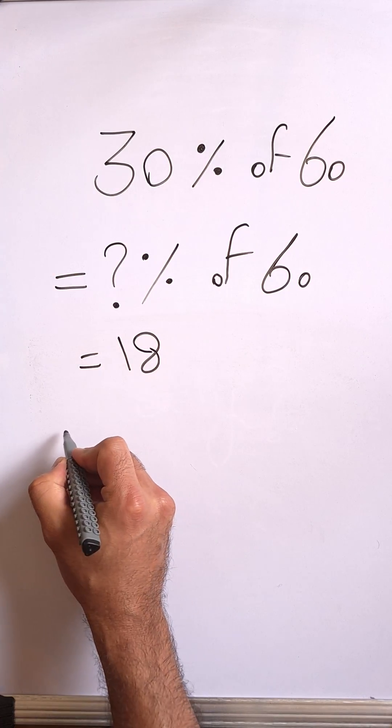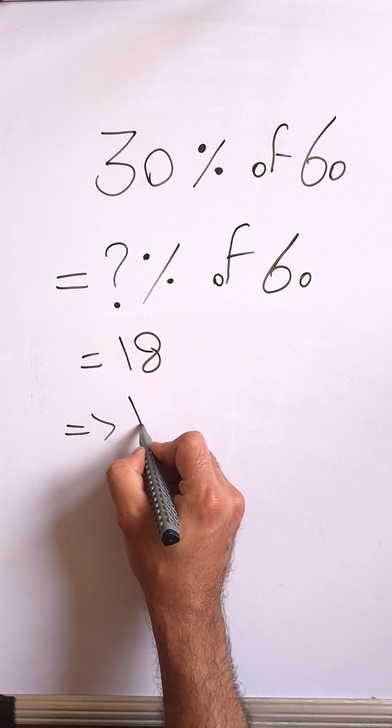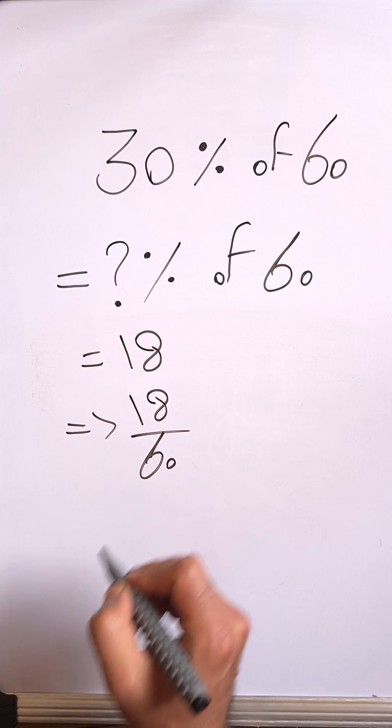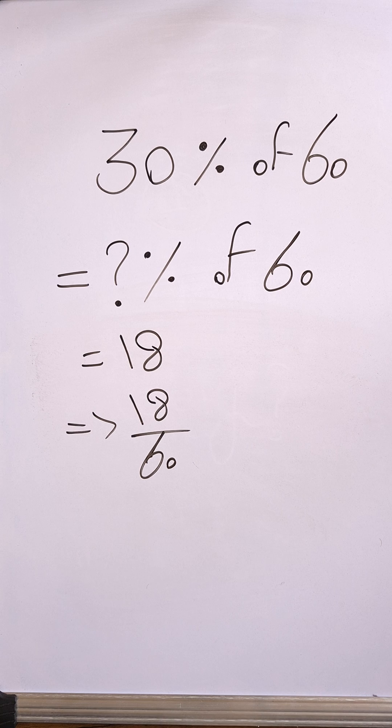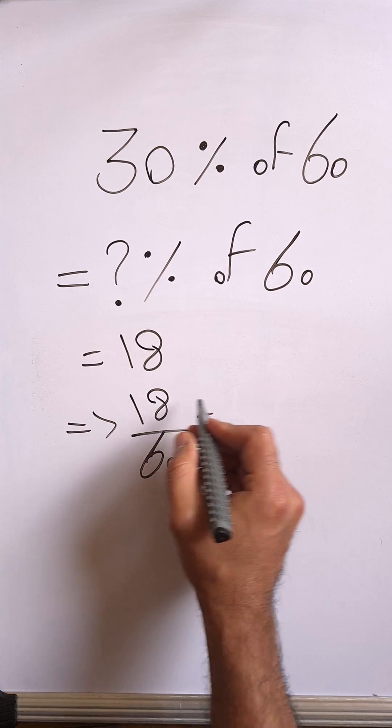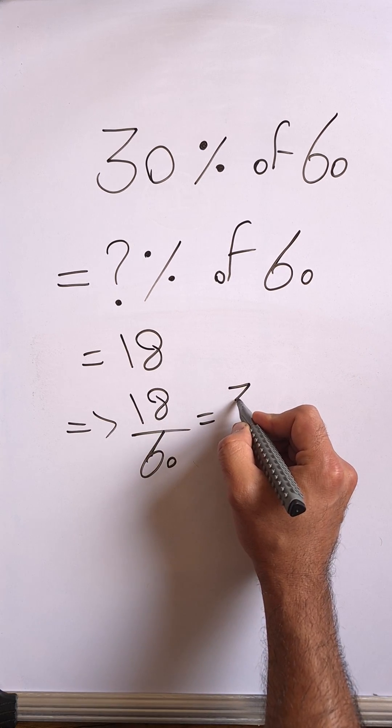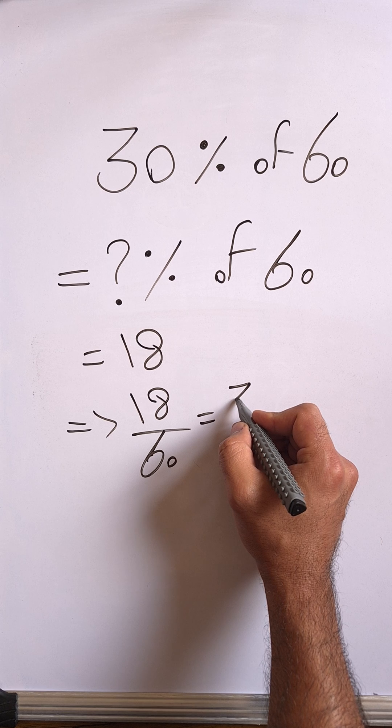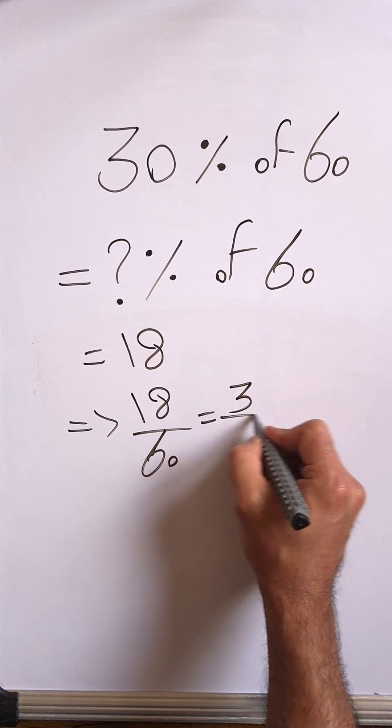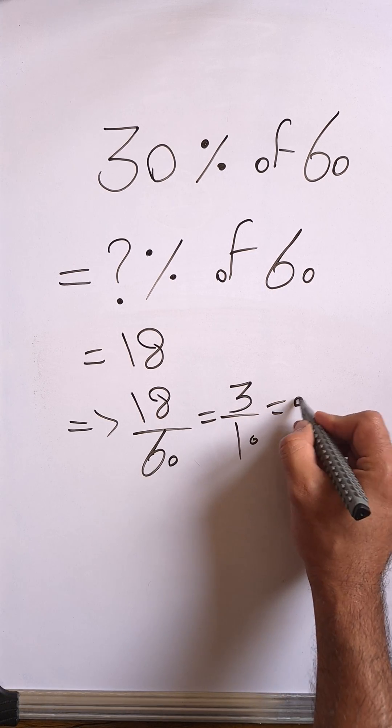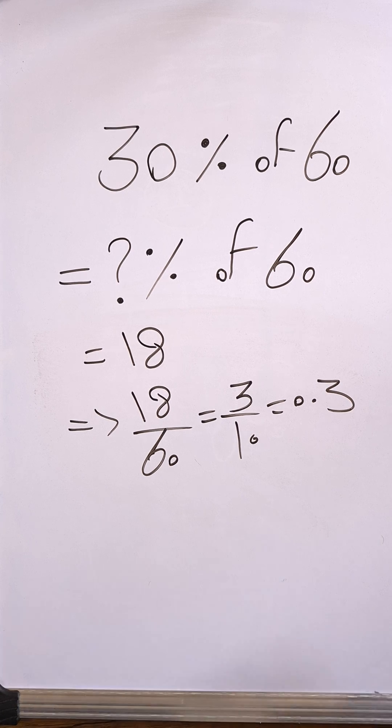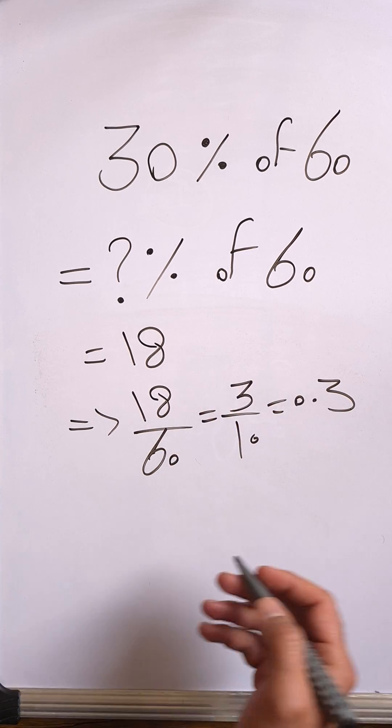Okay, I know it's the same thing as 30, but just let's just divide it. So 18 over 60, it is the same thing as, so let's just simplify that. So it is 3 over 10, right?